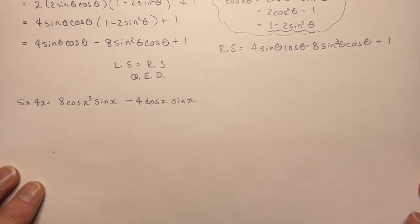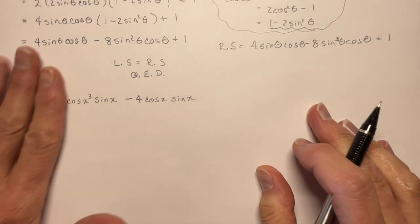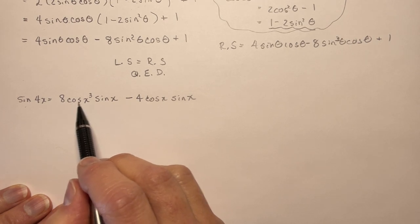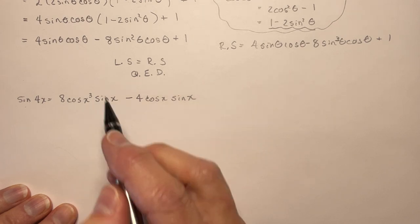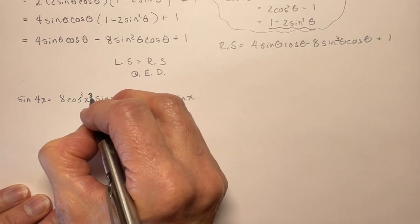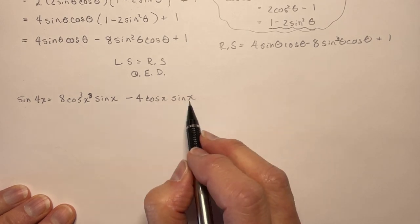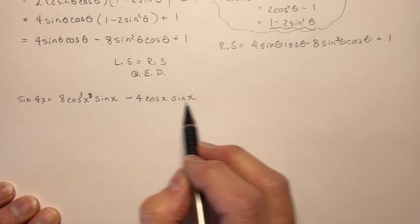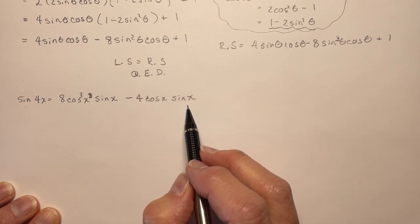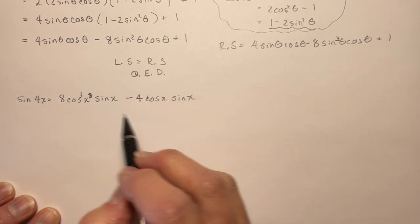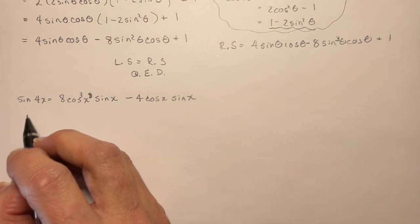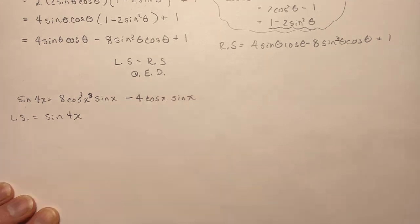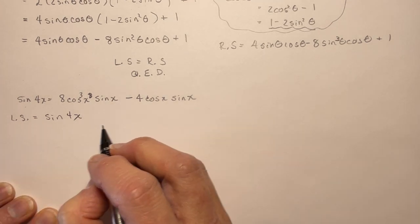Now the second identity — it looks harder than it is. On the left side we have sin 4x, and on the right side we have 8 cos³x sin x minus 4 cos x sin x. There isn't much you can easily factor on the right side without making a mess, so we're going to work with the left side.